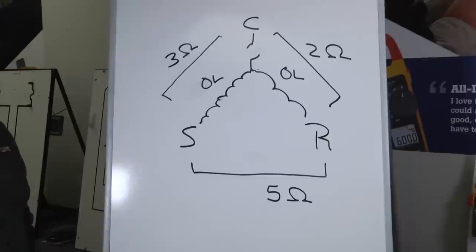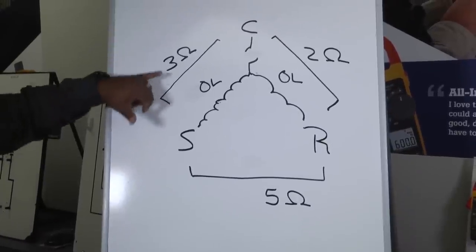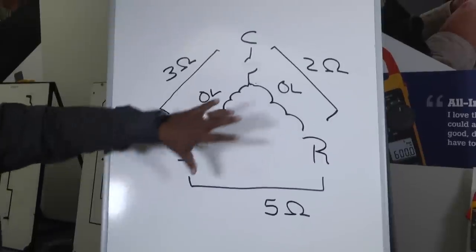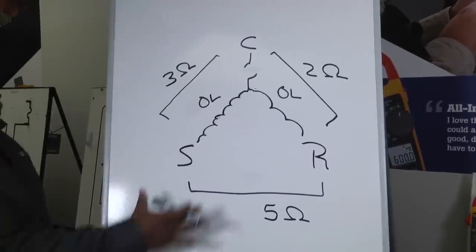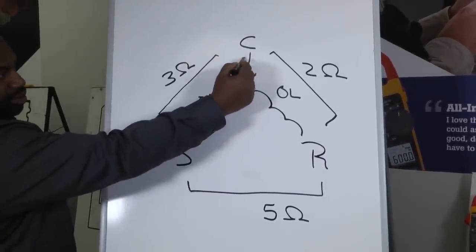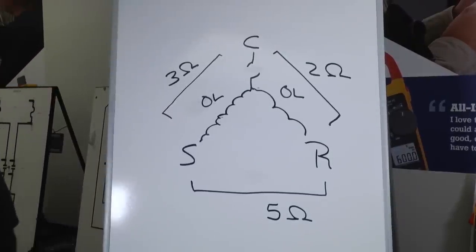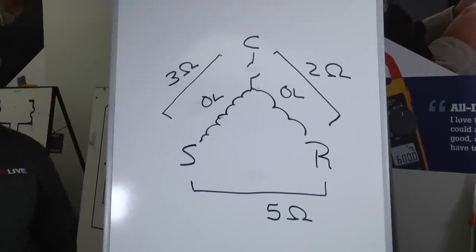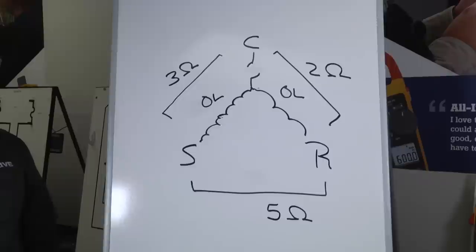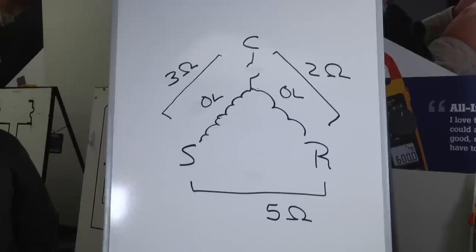But watch this, we could get a reading because we can make it all the way from start over to run, and so we would have a reading there. So when we look at our meter, if we draw that out and we have those two OLs, they're both pointing up to an open thermal overload.